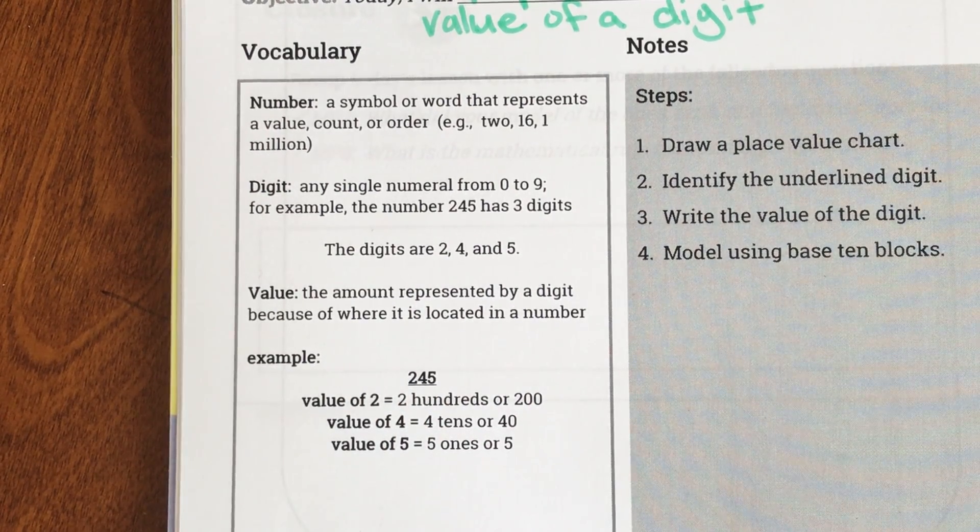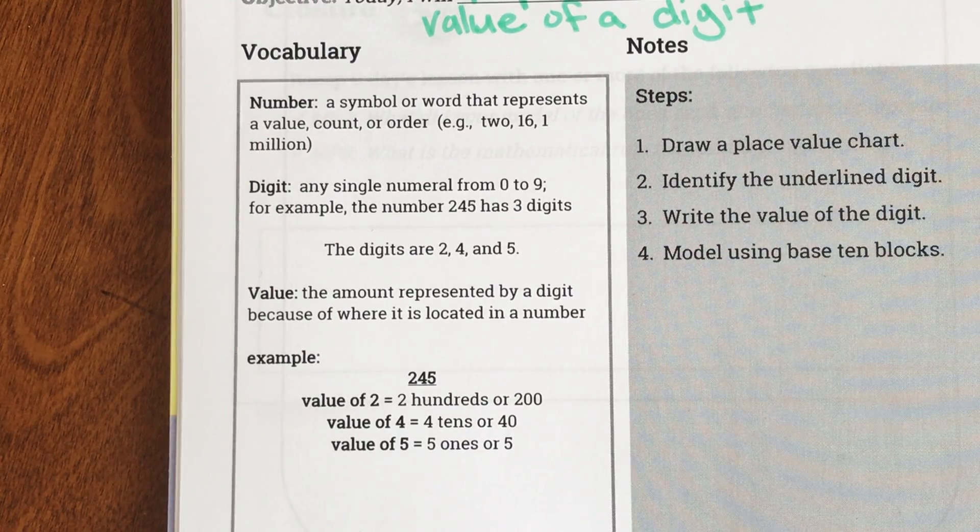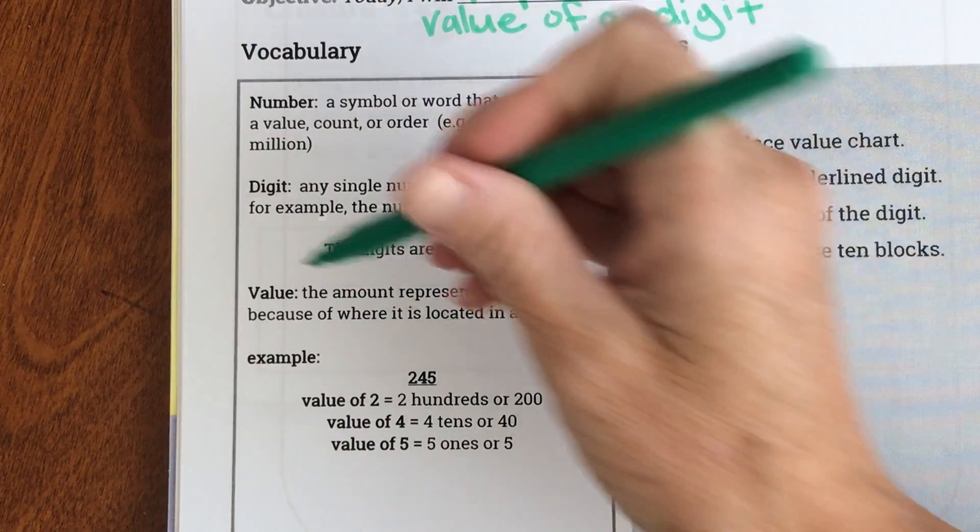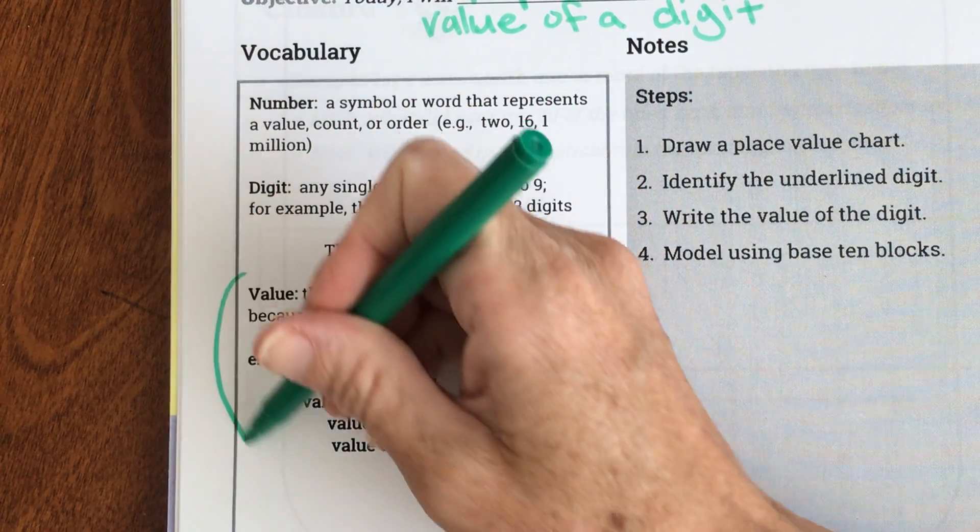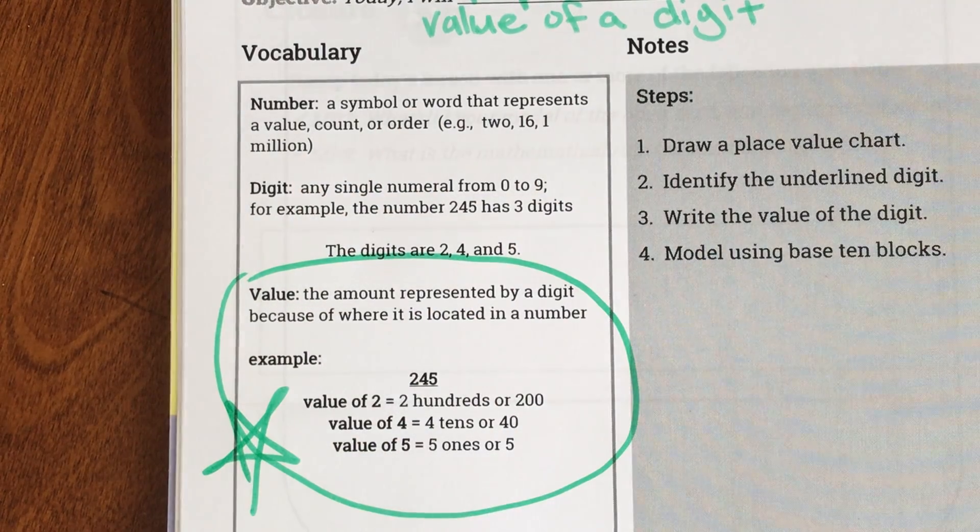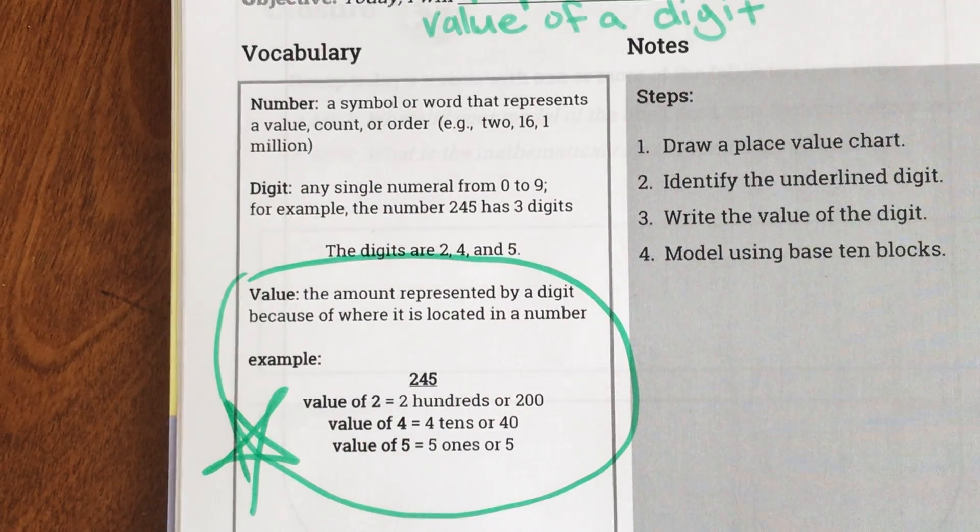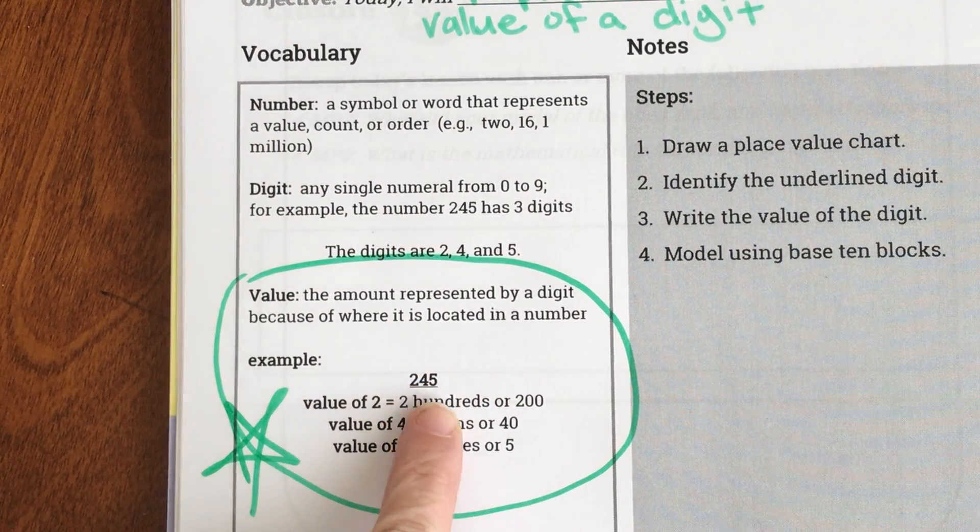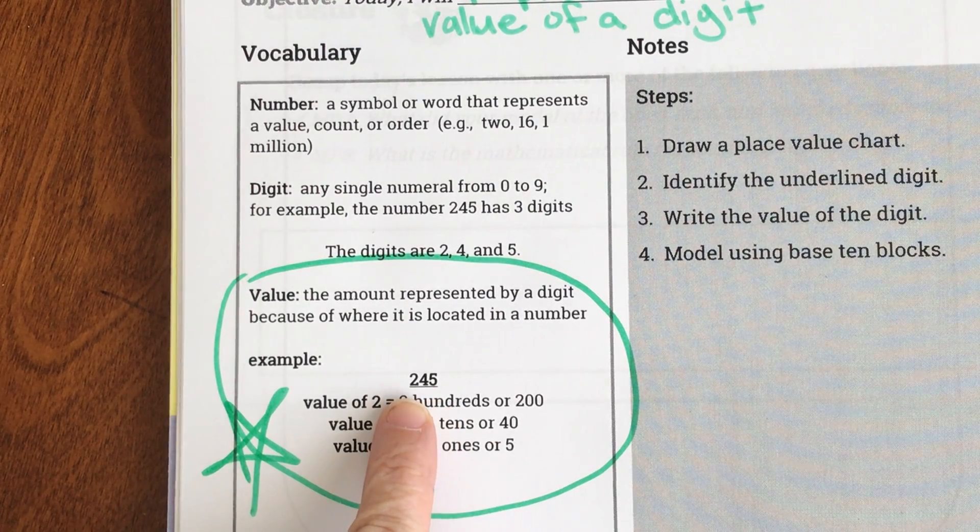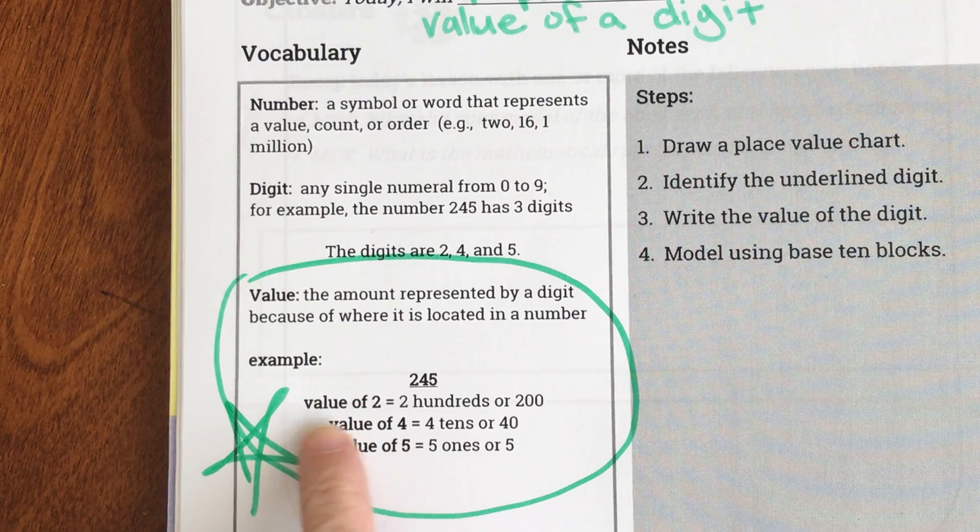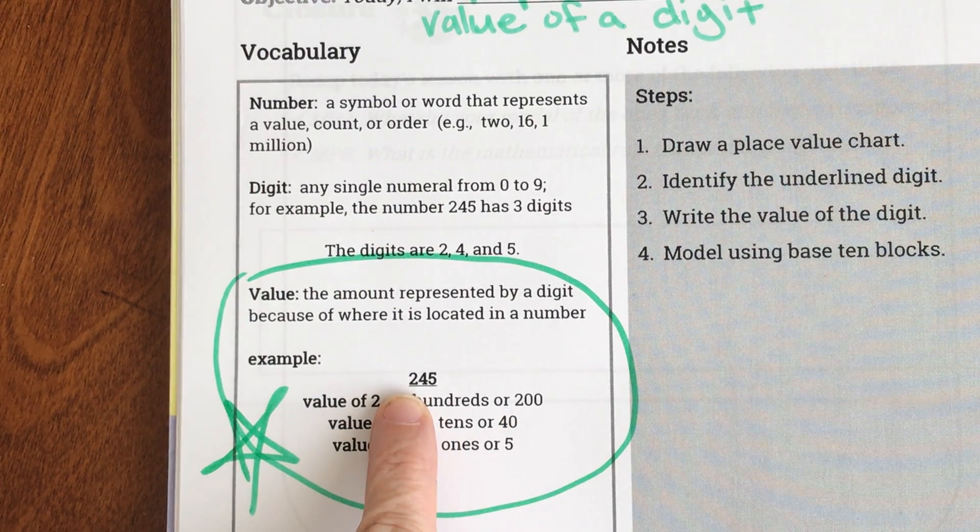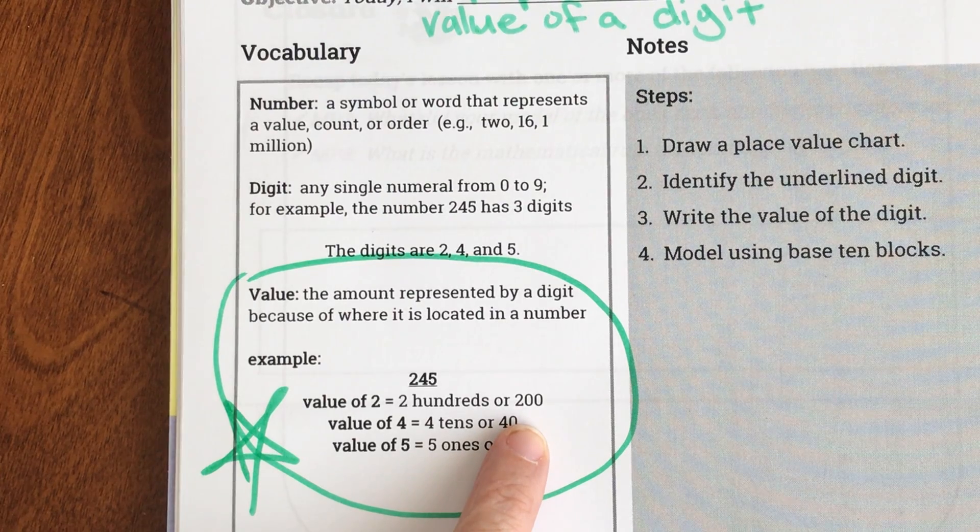And then value says the amount represented by a digit because of where it is located in a number, and this is what we're going to be talking about today ladies and gentlemen. So let's circle that because that's our important part today. It says the example, so in the number 245, the digit 2 is worth 200 because it's 2 in the hundreds place value.